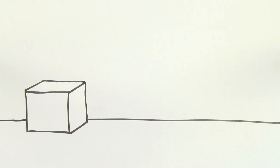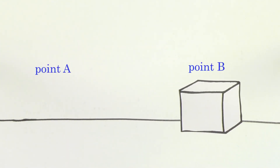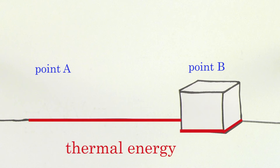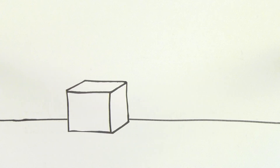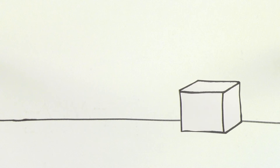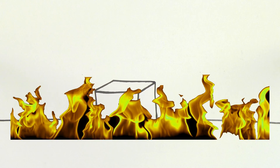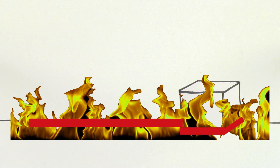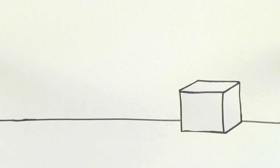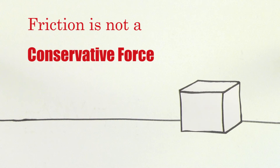If I move a mass along a table from point A to point B, friction does a certain amount of negative work on the mass, which creates some thermal energy. If instead of going straight from A to B, I make the block go from A to B back to A over and over again, the work done by friction will become larger and larger and it'll generate more and more thermal energy. Because the work done by friction depends on the path taken, friction is not a conservative force.